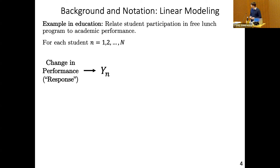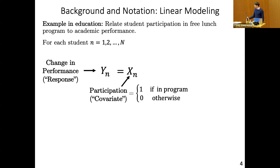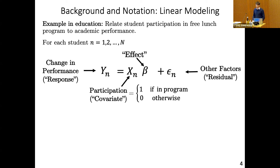To get started with some background notation, I'm going to introduce this in the context of a completely different example from genetics to emphasize the generality of this approach. Imagine we're interested in relating student participation in a free lunch program to those students' academic success. So we could have as our data for each of n students a response y — their change in performance measured with standardized test scores — and in our model this response is equal to a covariate x, which is one if the student is in the free lunch program and zero otherwise, times an effect beta representing the impact of that program on student success. This is the thing we want to learn, plus a residual epsilon capturing all other factors.